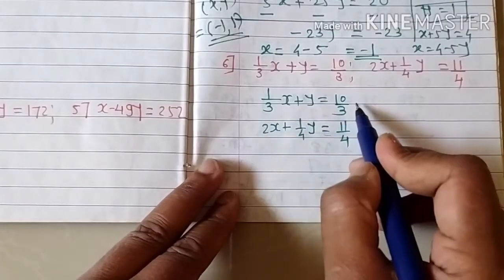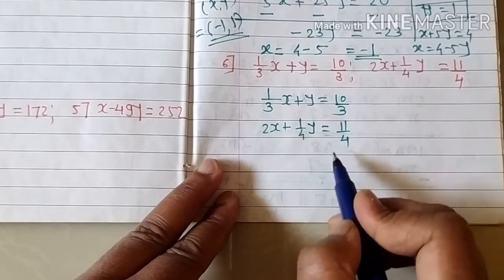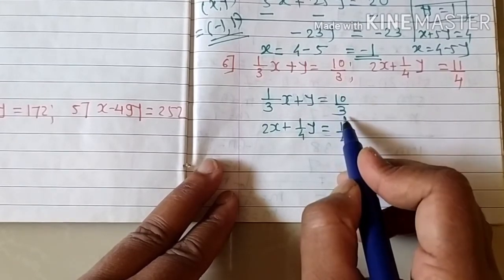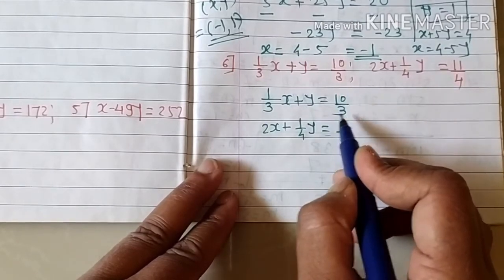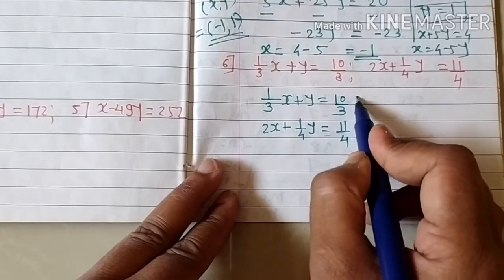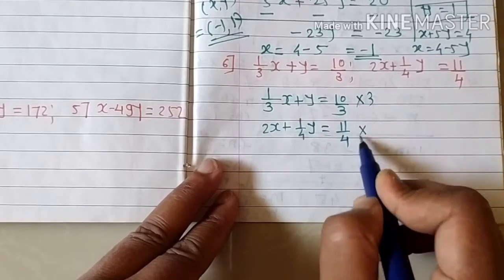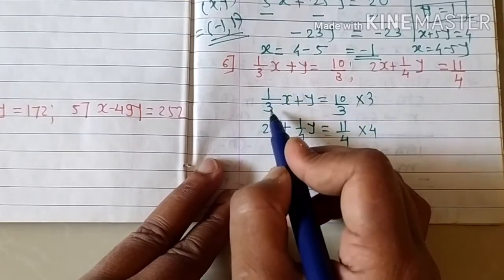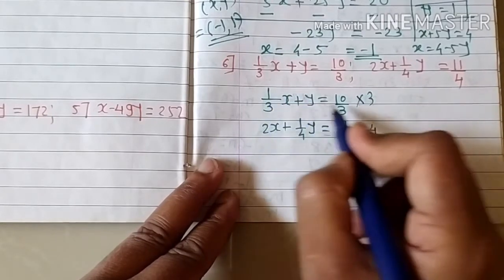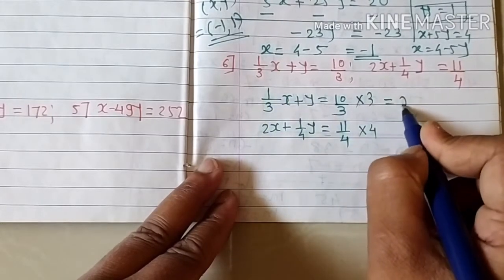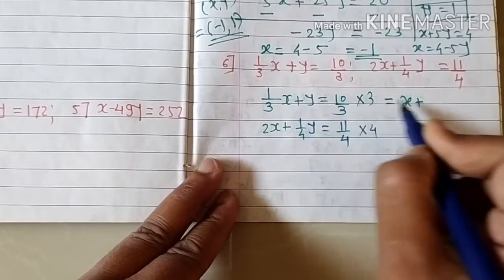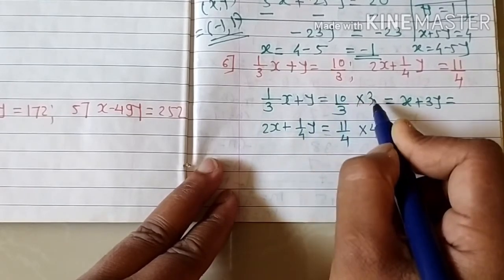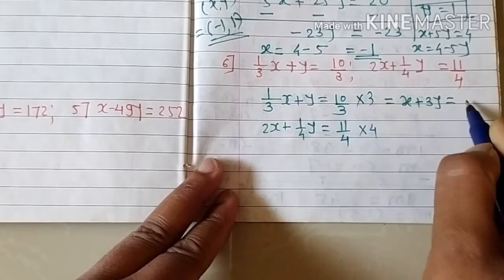First simplify equation one and equation two. Since there is a p over q form, multiply the whole equation one by 3 and equation two by 4. When we multiply by 3, the 3 over 3 cancels. The simplified equation one becomes 3y equals 10 — multiplying left-hand as well as right-hand side by 3.